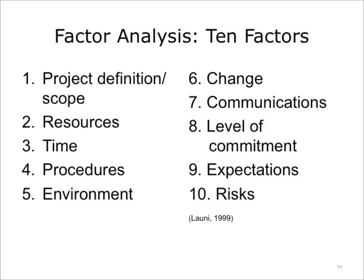When performing a factor analysis, there are at least 10 areas you should consider. First, definition and scope: understanding the project's primary purpose as well as listing all of the major functions and deliverables expected to complete the project is very important. Likewise, determining why the project was created and what mission it fulfills within the organization is crucial for determining the project's overall relevance and support. Resources: a factor analysis attempts to identify all of the necessary resources needed for the project's success, including monetary, technical, personnel, or special materials needed. Time: you should calculate the actual work time needed to complete the project as well as the overall timeline.